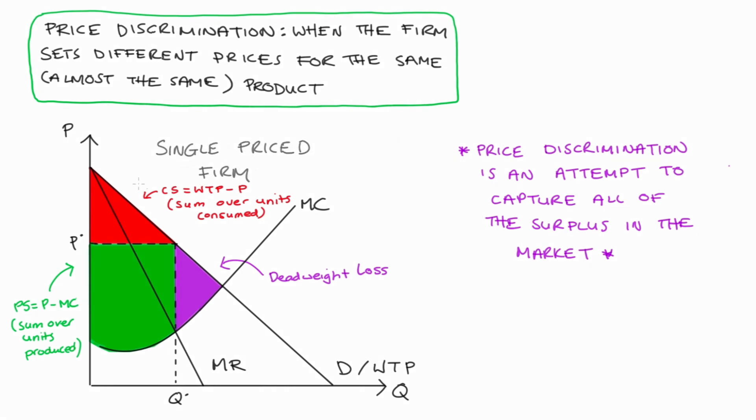If the firm can price discriminate, however, let's look up at this part of the demand curve. They can charge these guys here with a higher willingness to pay a higher price. So let's put in a price like P prime, perhaps. So everyone who has a willingness to pay higher than P prime pays P prime. And this actually means that the first Q prime units are sold at that price P prime. The rest of the units from Q prime to Q star, those units are sold at P star.